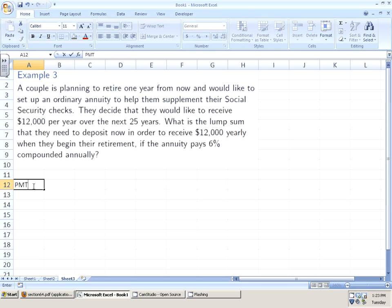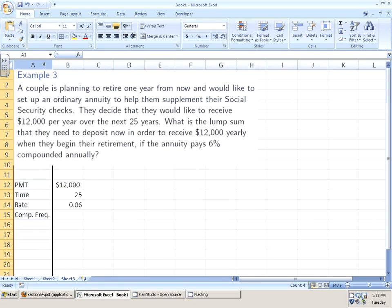So as an annual payment, they would like to receive $12,000. They've got 25 years in which to get that money out. The rate is .06%, or 6%, .06 as a decimal. And the compounding frequency is exactly what you'd expect is annually. So it's one time a year. Well, I want to know what the lump sum they need to deposit now is. So I'm looking for the present value.